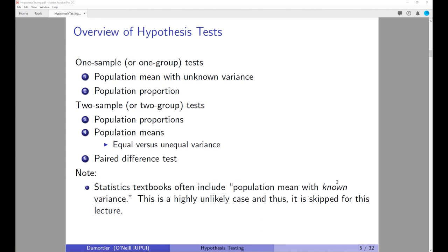For two-sample tests, we have two different samples or groups and compare whether they are similar or different. We are going to look at population proportions, population means, and also paired difference tests. Note that statistics textbooks often include the population mean with known variance, but I believe this is a highly unlikely situation and we are going to skip it.